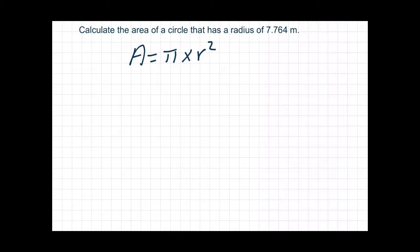First thing we need to do is simplify the formula, so we're going to change it to area equals pi r squared.